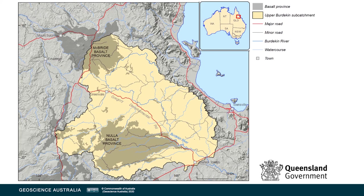The McBride and Nullar Basalt provinces are located to the northwest and southwest of Townsville in North Queensland. The hydrogeology of these two provinces was investigated as part of the Upper Burdekin groundwater project, a collaboration between Geoscience Australia and the Queensland Government. The aim was to develop an understanding of key groundwater system processes in each Basalt province. One objective was to better understand groundwater and surface water interactions — specifically how and where groundwater contributes to surface water flow, with a focus on the Burdekin River — and the role of springs in providing base flow to rivers and supporting groundwater-dependent ecosystems (GDEs).